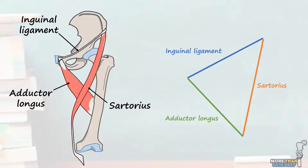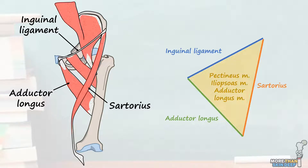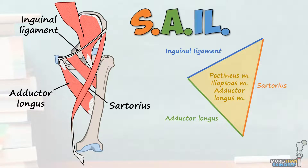Those are the main borders of the femoral triangle. The last two parts to be aware of are the floor, which is formed of parts of the pectineus, iliopsoas, and adductor longus muscles, and the roof, which is formed of fascia and skin. There are loads of ways to remember the borders of the femoral triangle, but a common and easy one is using the mnemonic SAIL, which stands for Sartorius, Adductor Longus, and Inguinal Ligament.